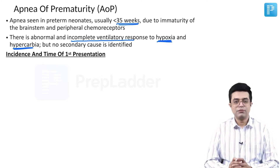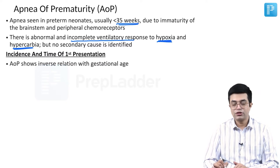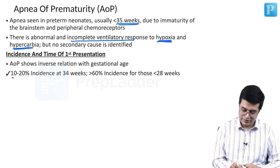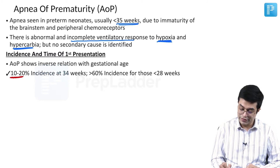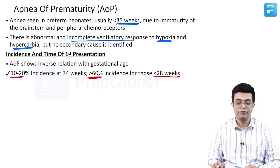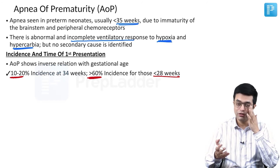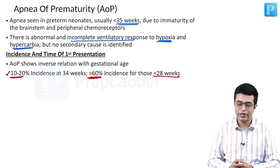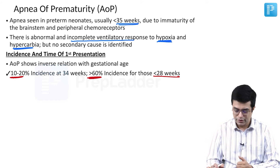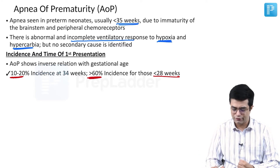Regarding incidence and time of first presentation: AOP shows an inverse relation with gestational age. There is a 10 to 20% incidence at 34 weeks, and more than 60% incidence for less than 28 weeks. Some textbooks quote a range of 80 to 85%, but the EAMS protocol states more than 60%, so we take that value.